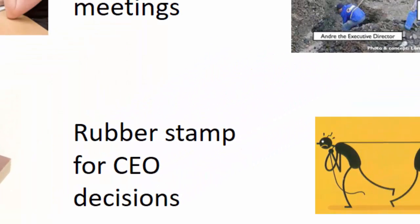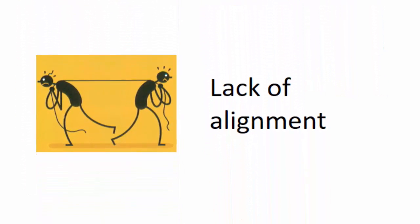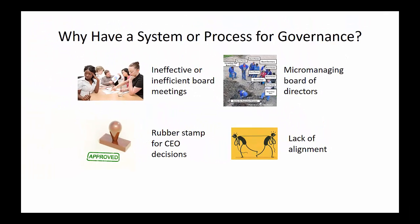Alternatively, you can have certain board members that are micromanaging and try to get into the details of what's happening in the organization and provide very specific direction. And finally, there can be lack of alignment where you've got board members who have very different views and don't agree and work at cross purposes, and there's not a way to bring them together in a common board position. We'll see as we go through the policy governance system how it addresses some of these common board problems.